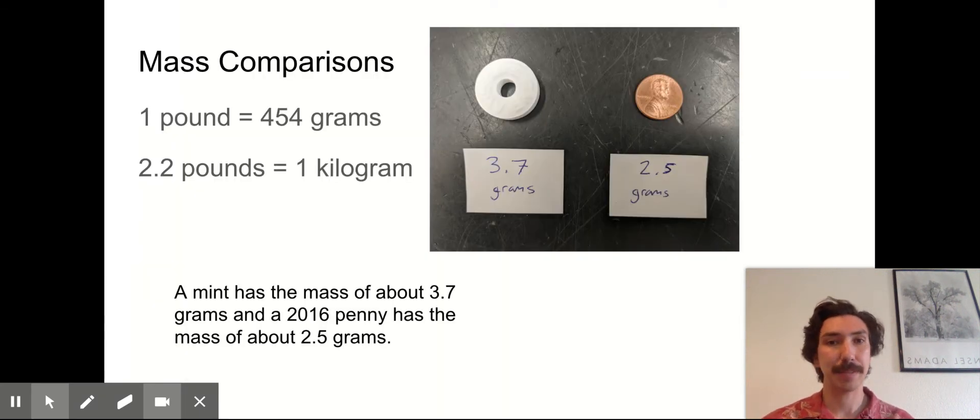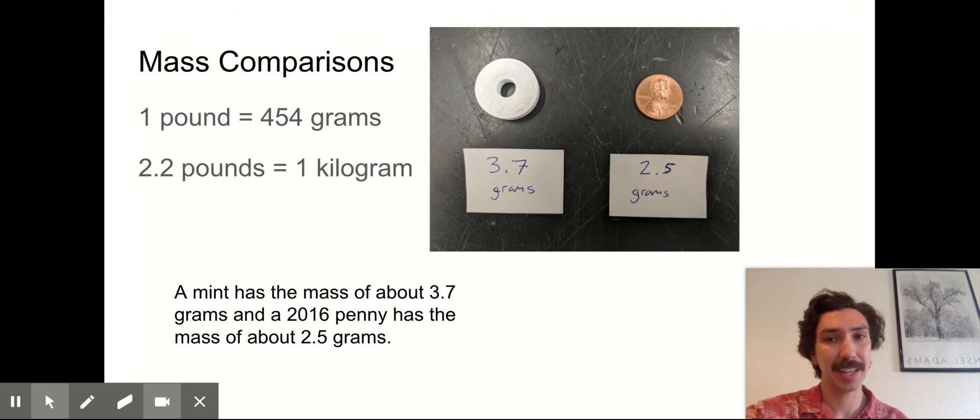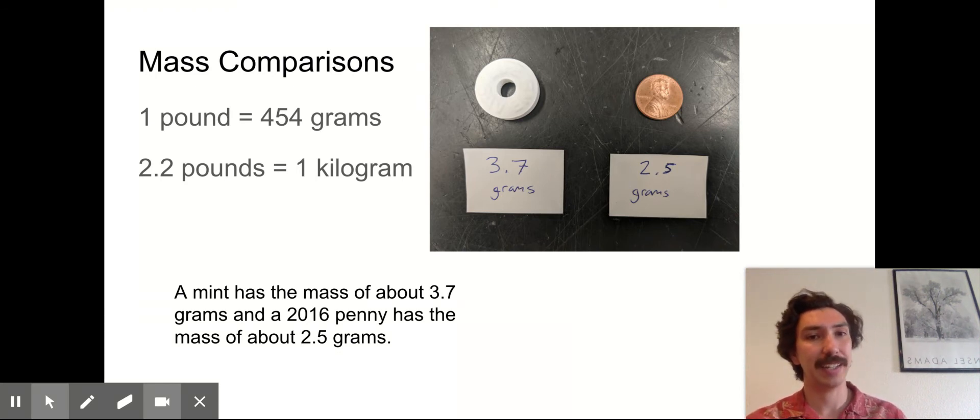Here are some mass comparisons just to help you kind of understand what the size of a gram is, what the size of a kilogram is. So one pound is equal to 454 grams and a kilogram is about 2.2 pounds. So here's two small things you might have at home. A mint is about 3.7 grams and a penny is about 2.5 grams.